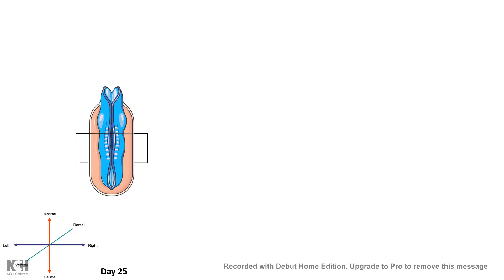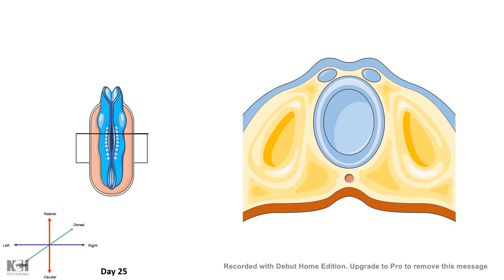Neural tube folding starts from the middle part and spreads in the rostral and caudal direction, and is almost complete by day 25, so the tube is now well defined. Alongside the tube, the mesodermal tissue forms the somites, and the neural crest cells form several distinct populations.